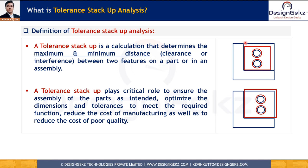As shown in this example, we have blue and red parts which are assembled together. In this example, we might be interested in finding the clearance when these two parts assemble together in their worst case. In another example, we might be interested in calculating the overlap when these two parts are assembled together. This can be done with tolerance stack-up analysis.